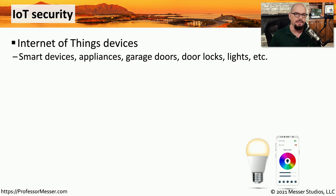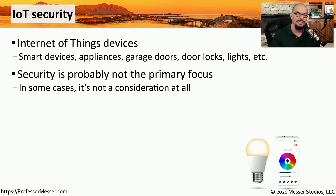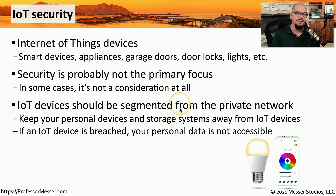We have an increasing number of devices connecting to our wireless networks — very often these are IoT devices, or Internet of Things devices, such as garage door openers, appliances, door locks, and lights. One challenge is that a manufacturer of a garage door opener may not be familiar with all the intricacies of network security. At a minimum, we might want to ensure our IoT devices are on one wireless network while private laptops and storage devices are on a completely separate network, so that if someone gains access to an IoT device, they have a limited scope of what they can access.